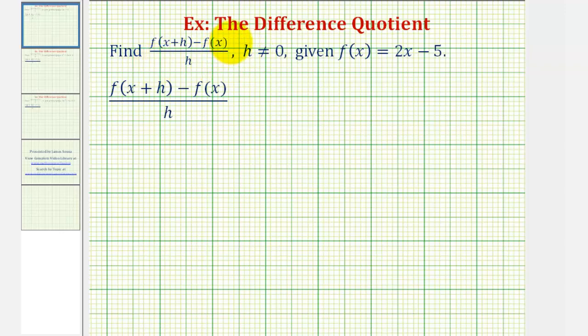Welcome to the first example of determining the difference quotient for a given function. This quotient here is called the difference quotient. And while it might seem random at this point, this is actually a very useful quotient. If we knew the value of x and the value of h, it would give us a slope of a secant line to a given function.